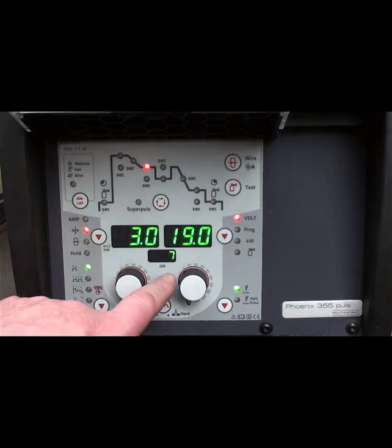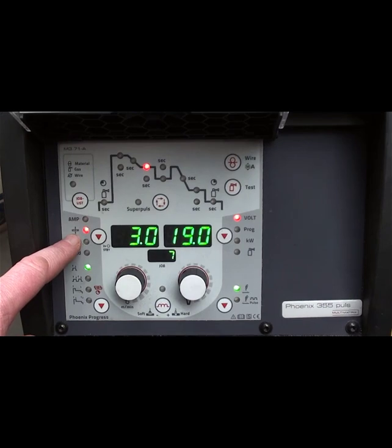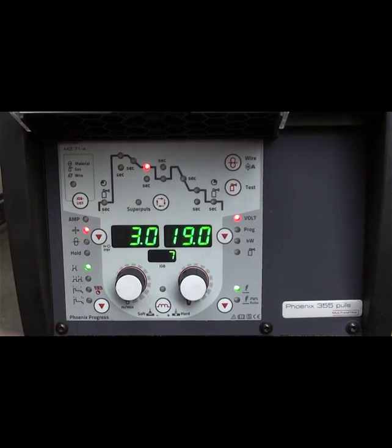So into job list, set your job number correctly. Then the easiest thing on these synergically controlled welders is to set it to the material thickness and it automatically sets it up for voltage and your amps accordingly.